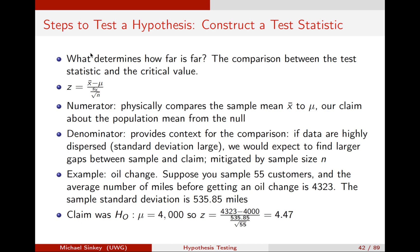Critical values are cutoffs of plausibility — once our test statistic is further away than these critical values, it becomes implausible to think that the null adequately captures the value of the population mean. Based on the information you receive from your sampling process, you cannot reasonably justify claiming that that's the population mean. In the numerator, we physically compare the sample mean to mu from our null hypothesis. The denominator has the standard deviation divided by the square root of the sample size. As we have larger and larger samples, the test statistic inflates because the square root of n gets bigger — the larger the sample, the bigger the test statistic if everything else is the same.